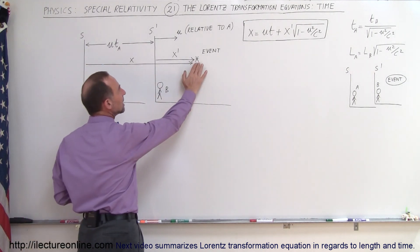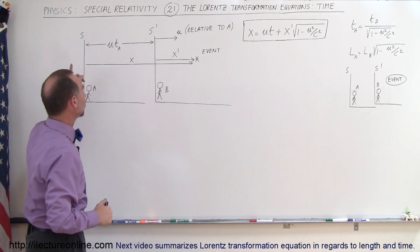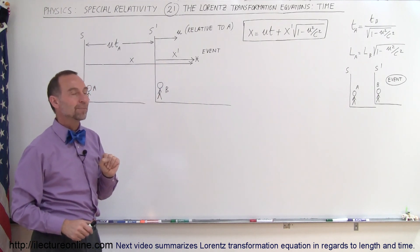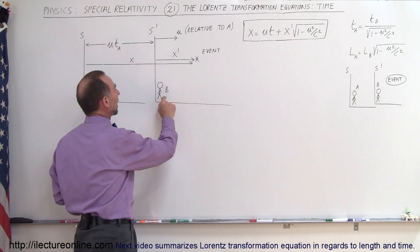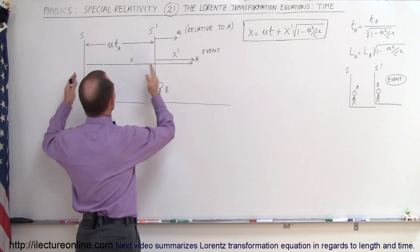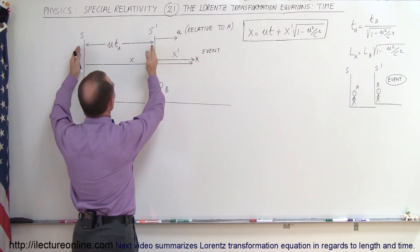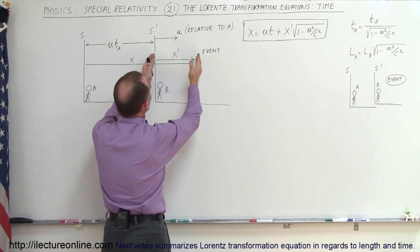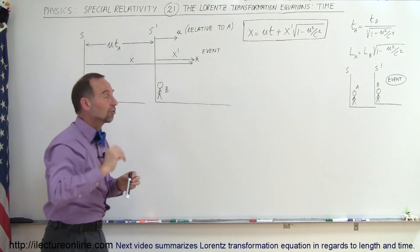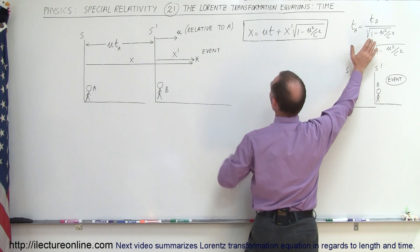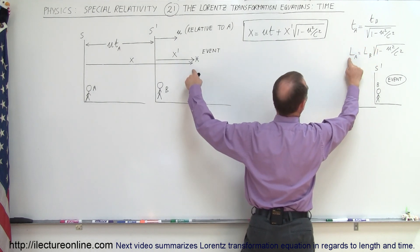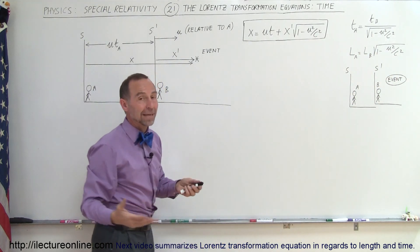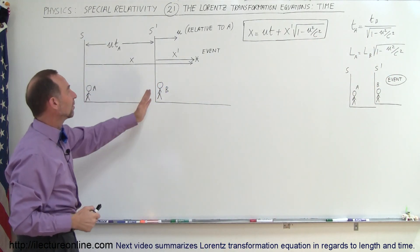Some event happens in the moving reference frame. The position measured to that event is x according to A and x prime according to B. The distance from A to that event is u times t as observed by A, plus the distance as measured by B but adjusted for the transformation. So the position as seen by A equals the position as seen by B by this quantity here — x prime being the distance to the event as seen by B.